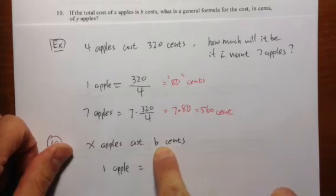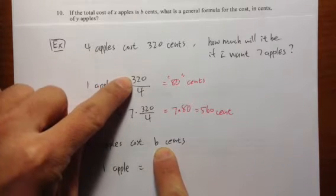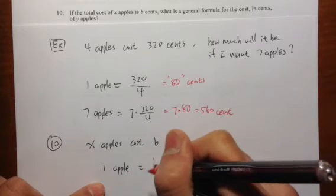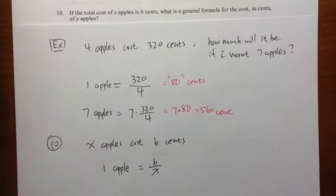Which is B, just like this 320 right here, divided by X. One apple costs B over X cents.